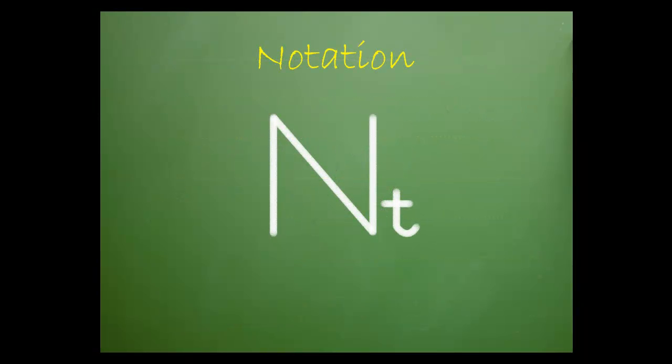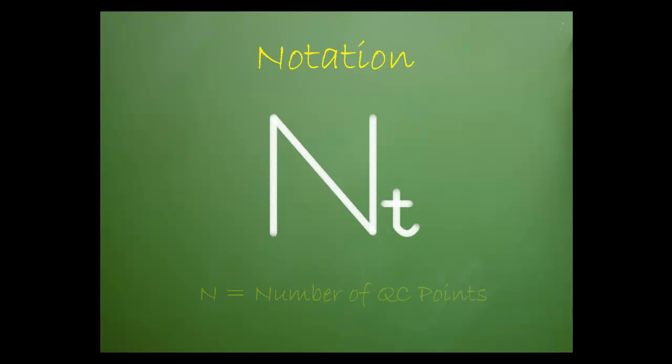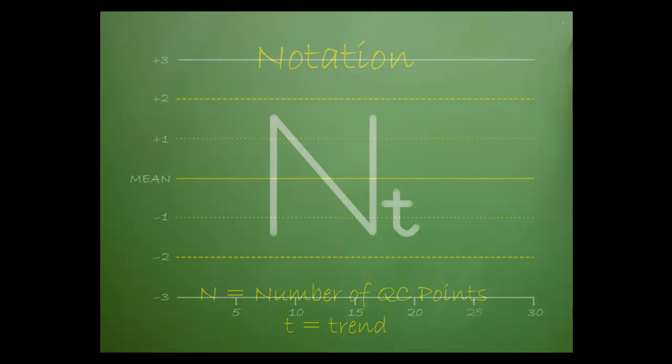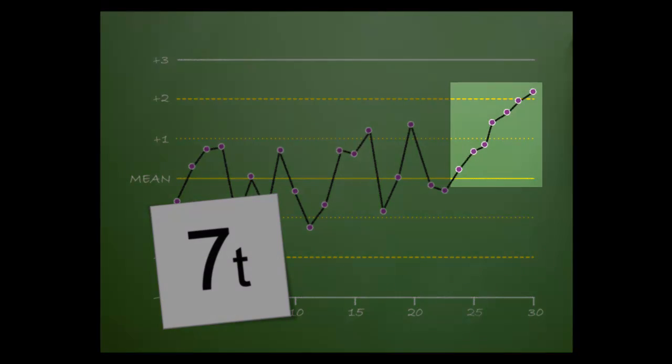An additional rule notation is NT. N is equal to the number of QC data points. T represents the consecutive data points for a single level of control that shows either a strict increasing or decreasing pattern. In this case there are seven consecutive points increasing on the same side of the mean.